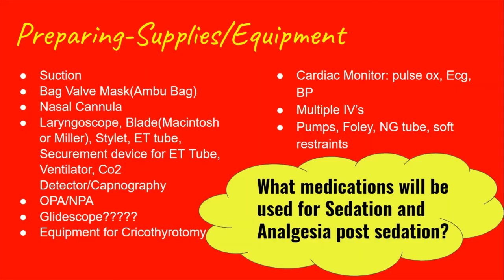Post-intubation, you're going to want to put your patient on soft restraints so that they don't wake up accidentally and extubate themselves. You're going to want to place a Foley, place an NG tube to decompress the stomach and prevent acids from coming back up. You're going to want to have many pumps because your patient is going to be on a variety of drips for post-sedation, analgesia, and other medications. An important question to ask your provider before intubating is what medications will be used for sedation and analgesia after the intubation, so they can be prepared and ready once complete — whether that's Propofol, Versed, Fentanyl, and so on.